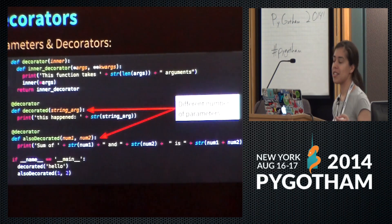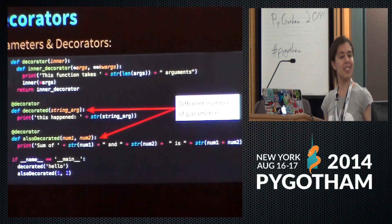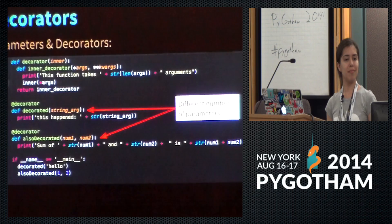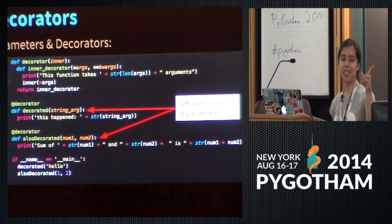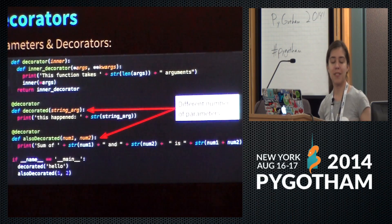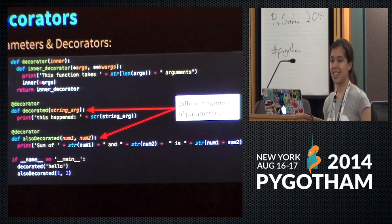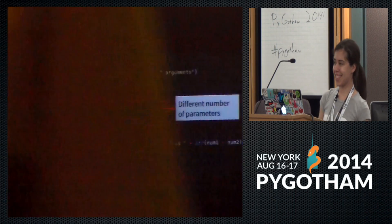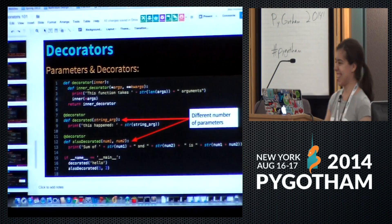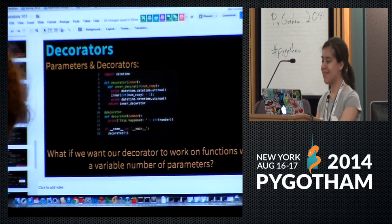I think the only thing after this is lunch, so if you have any more questions I'll be around. Just to note: Python, Ruby, and JavaScript all implement functions as first-class objects, so everything said about Python is applicable to JavaScript and Ruby. Yay, functional programming!